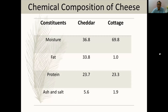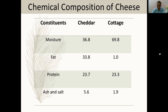The chemical composition of cheese includes moisture, fat, protein, ash, and salt. On screen you can see a comparison between cheddar cheese and cottage cheese. Cottage cheese has approximately 70% moisture and very low fat, whereas cheddar cheese has about 34% fat. Protein is roughly similar in both, and their acid and salt content also differ.